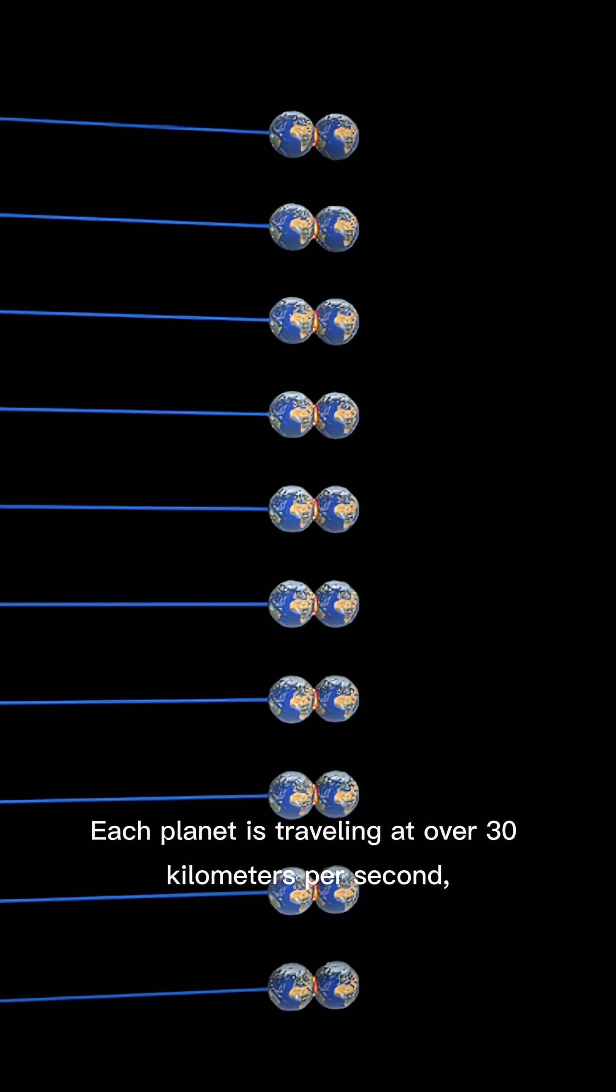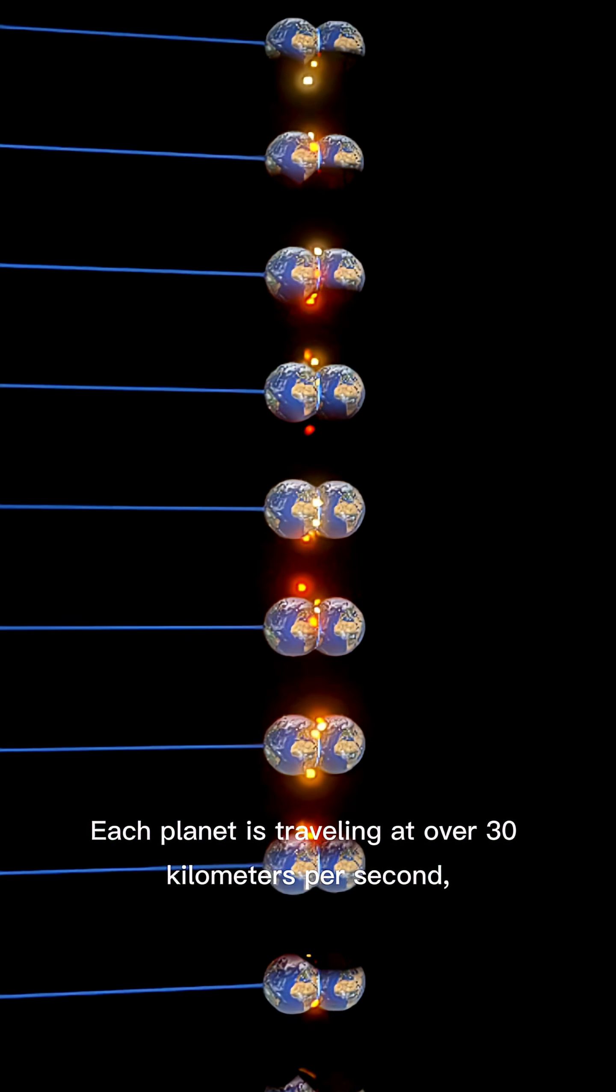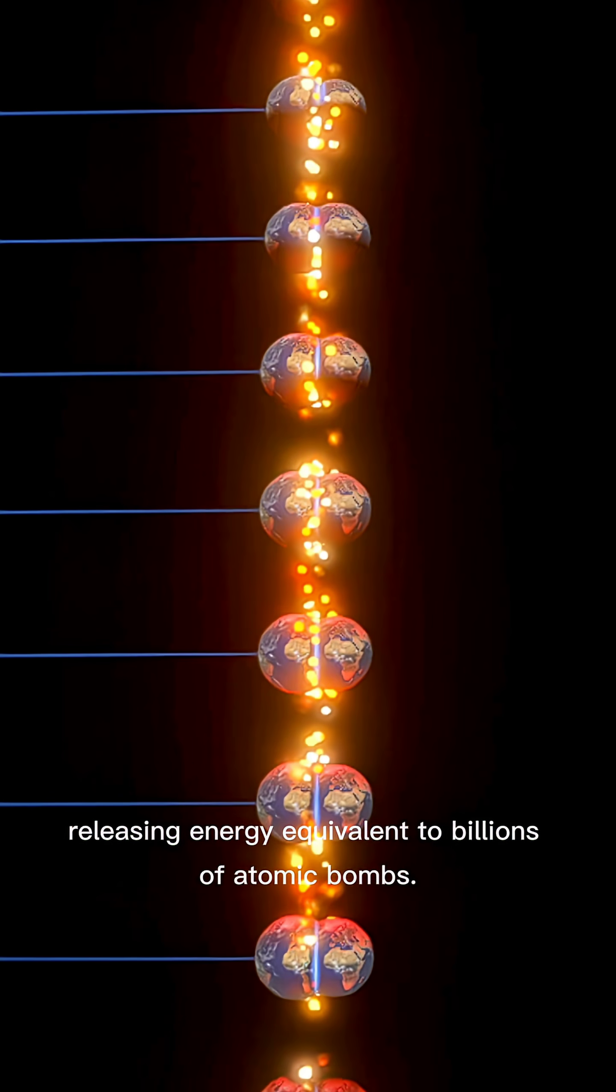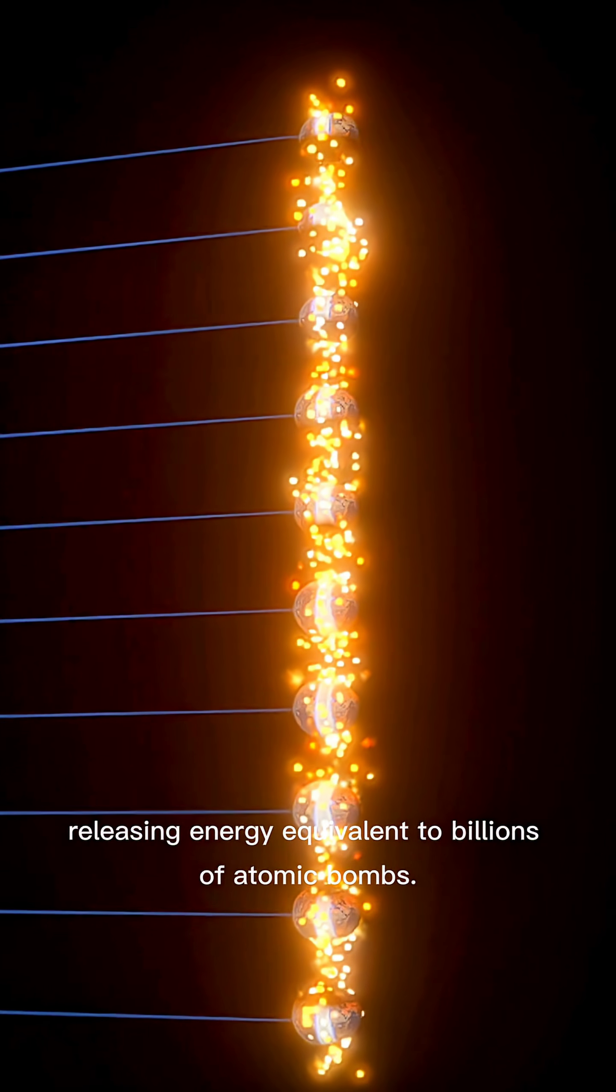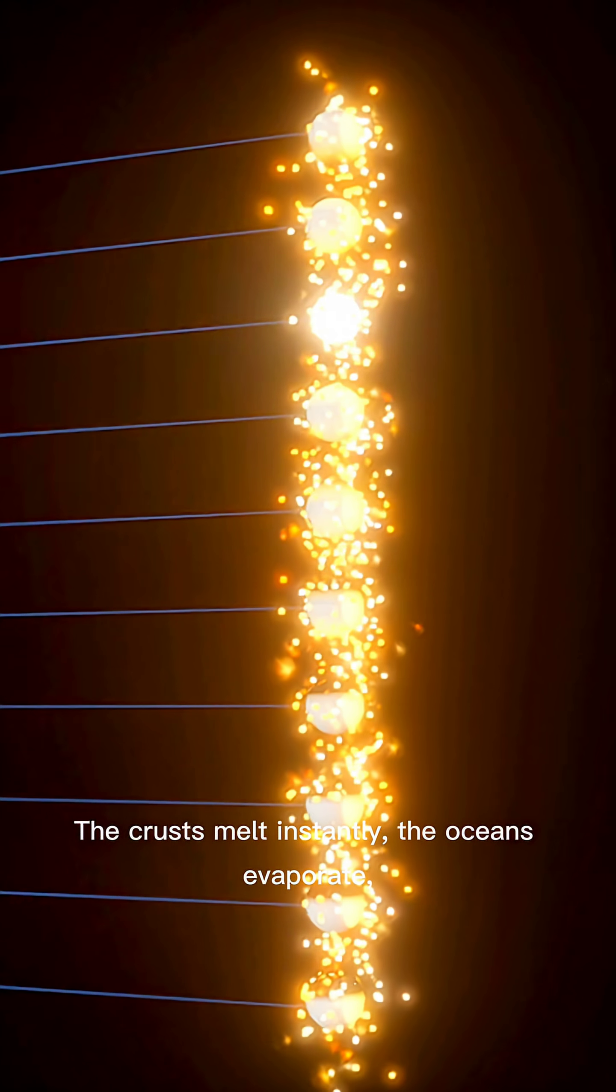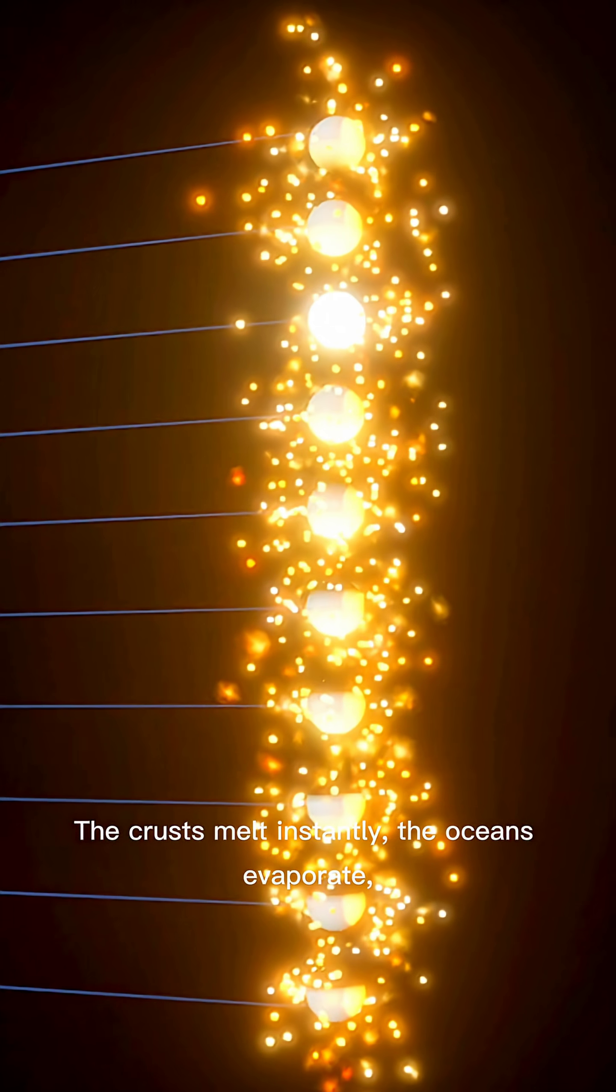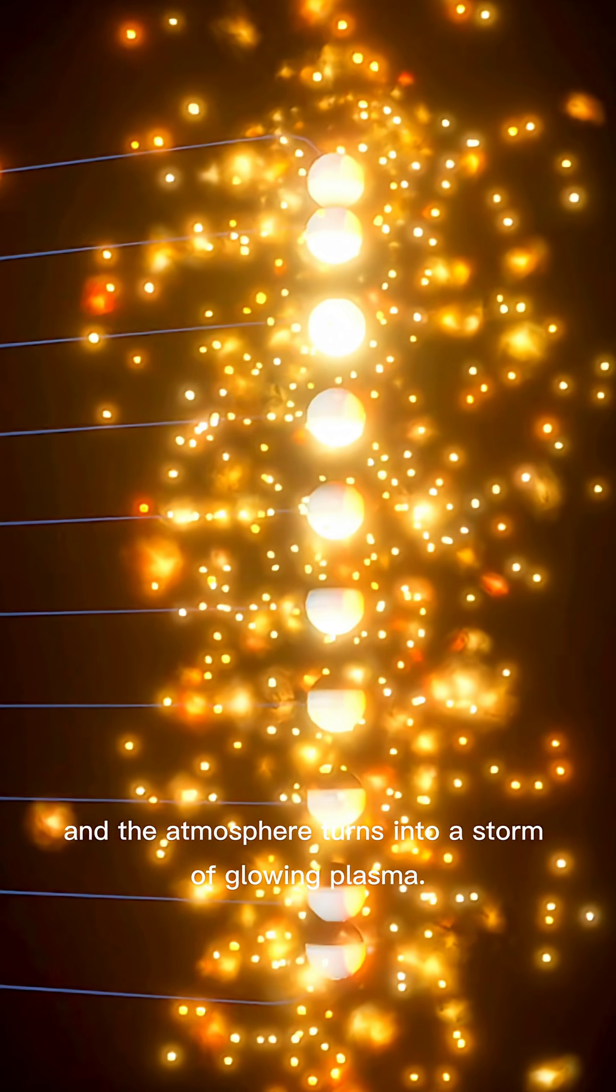Each planet is traveling at over 30 kilometers per second, releasing energy equivalent to billions of atomic bombs. The crusts melt instantly, the oceans evaporate, and the atmosphere turns into a storm of glowing plasma.